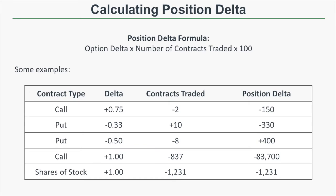So let's look at some examples. Let's say we have a call option with a delta of 0.75 and we short two of those contracts, so our number of contracts is negative 2. Our position delta based on the formula is going to be negative 150. That means for a $1 increase in the stock price, we're expected to lose $150, and for a $1 decrease in the stock price, we're expected to gain $150.